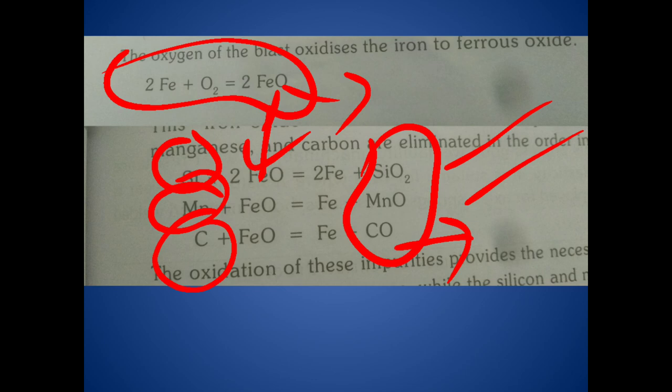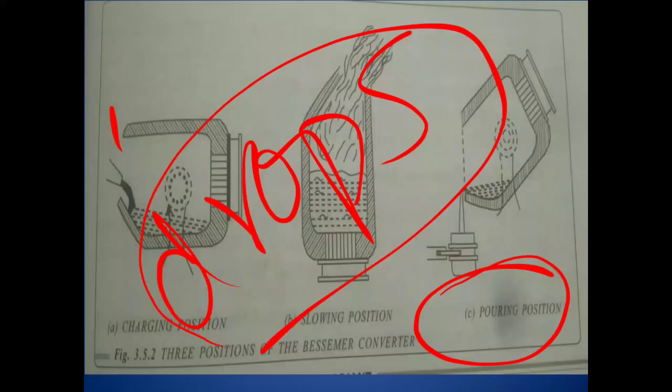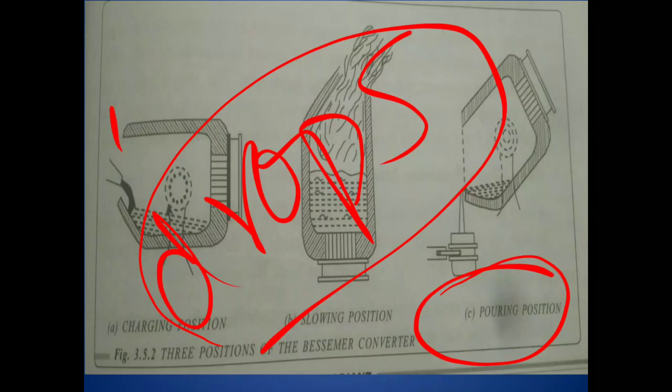The acid Bessemer steel possesses good weldability, machinability, and wear resistance, but has poor plasticity. It is suitable for rails where resistance to wear is desired, as well as axles, springs, wires, saws, bolts, nuts, and welded tubes. The key requirement for selecting the acid Bessemer process is that the pig iron must have low sulfur and low phosphorus content.